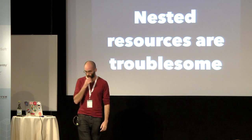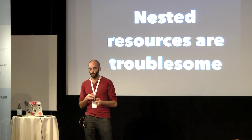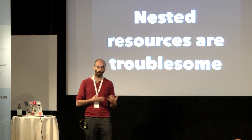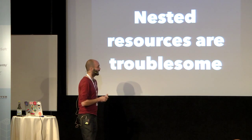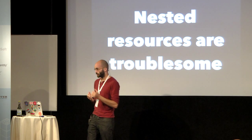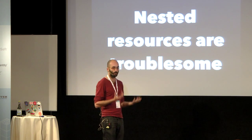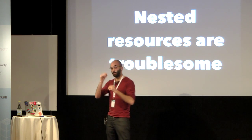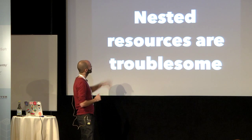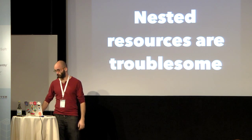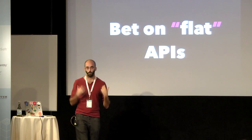Another thing we discovered: our first version of the API had nested resources, so the responses were really big — tasks contained all the comments and so on. In general, that's really troublesome. It's very difficult to cache and really inefficient because most of the time you only want one part of the data. In my opinion, it's better to avoid nested resources. I always say: bet on flat APIs.